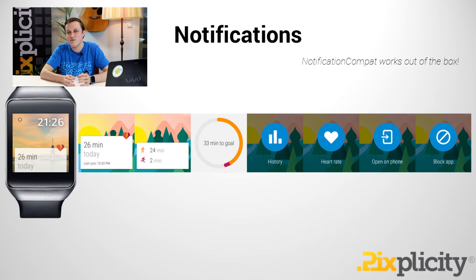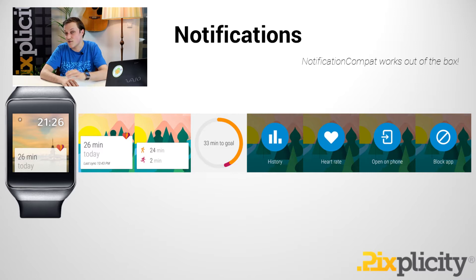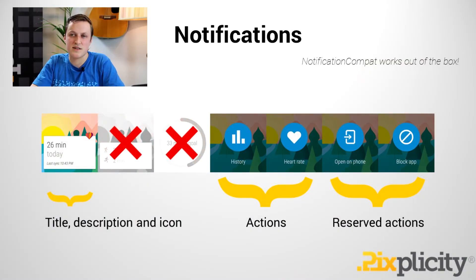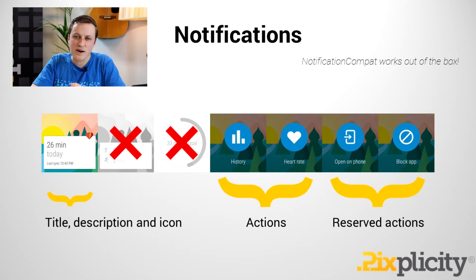The awesome news is NotificationCompat works straight out of the box. Most everything already works, and you should of course be using NotificationCompat for Jellybean and up to get things like Actions and Big Picture and Big Text-style notifications working on your Android device already. There are a few caveats. These two style pages in a notification on Android Wear require a little bit of tinkering, so I'll get back to them in just a moment.